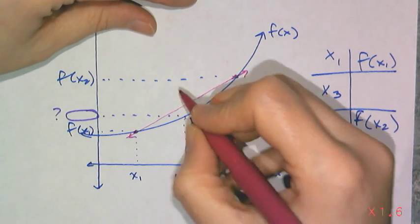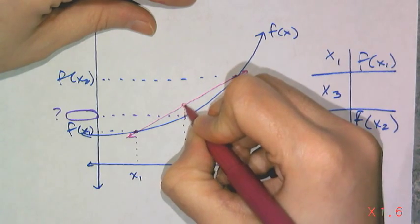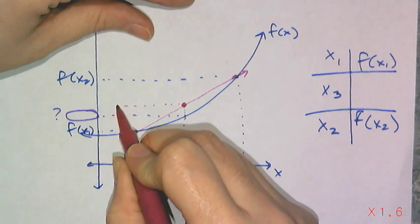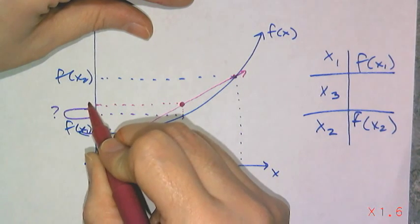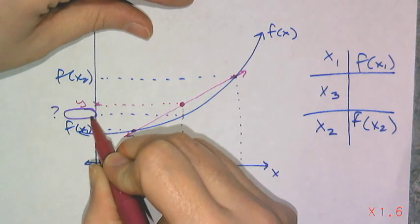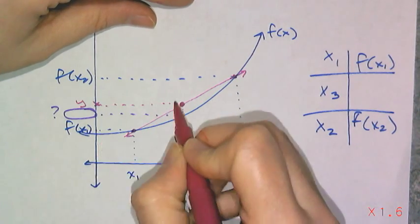So instead of actually finding the point on the curve, what interpolation does is it finds the point on this line. So what you're actually going to figure out is this value right here. You're going to find that y value right there, not the actual value but an approximation of it.